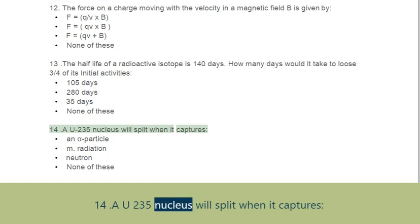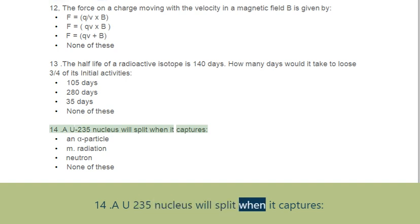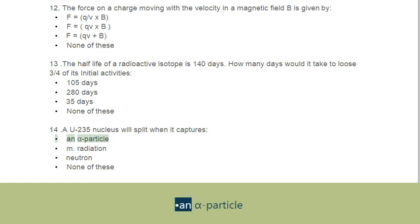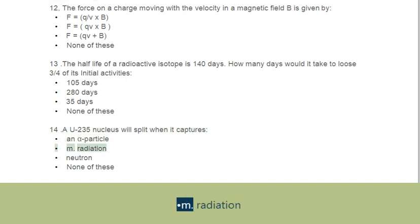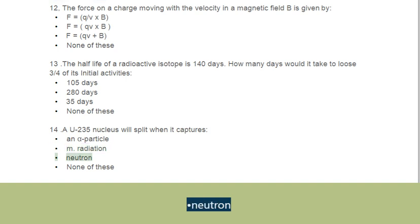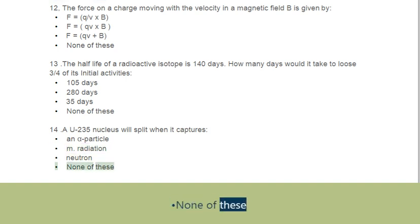Question 14: A U-235 nucleus will split when it captures. Options: A. Alpha particle, B. Beta radiation, C. Neutron, D. None of these.